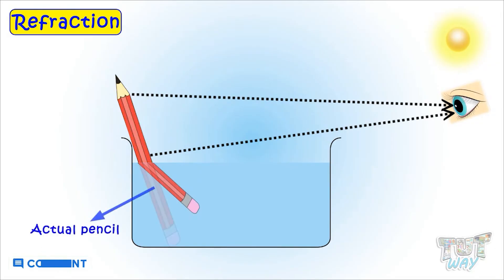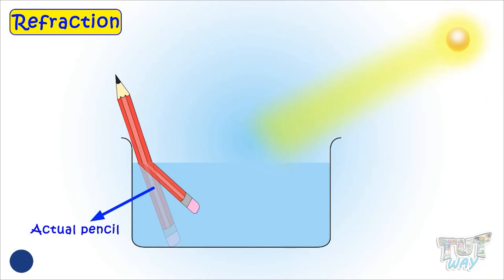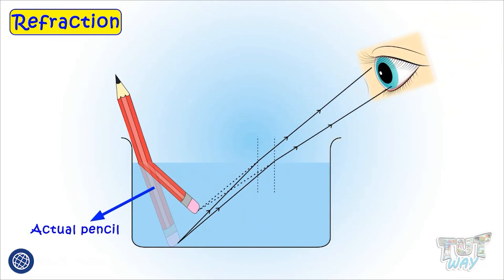But the other half of the pencil is in the water. The light falling on the pencil doesn't come to our eyes directly. It gets bent because it is coming from the water to the air. And this is why we see the other half of the pencil bent.